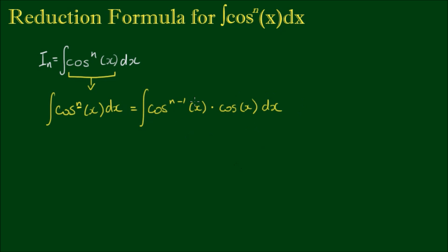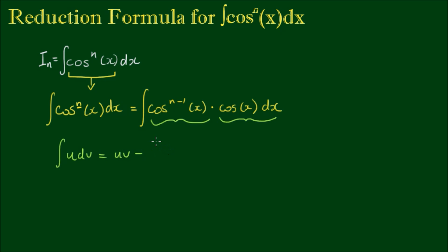On the left-hand side we can see that we have two parts: the first part is cosine to the n-1, and the second part is cosine x dx. The integral of two functions of x multiplied together can be found through integration by parts, where the rule is: the integral of u dv equals u times v minus the integral of v du.